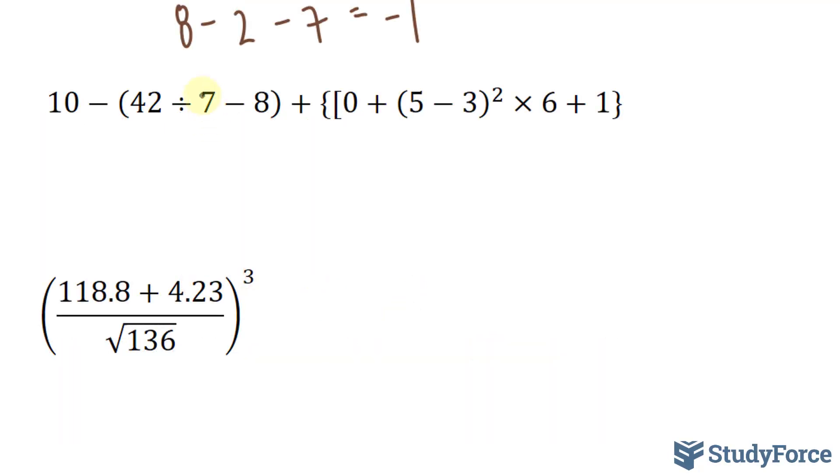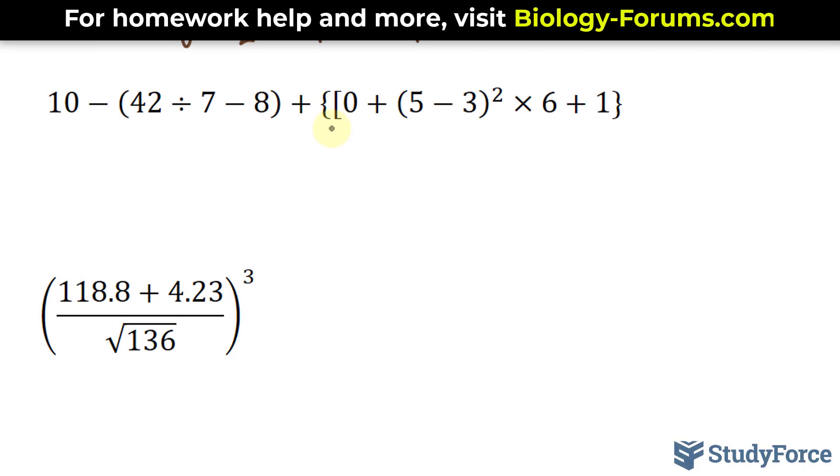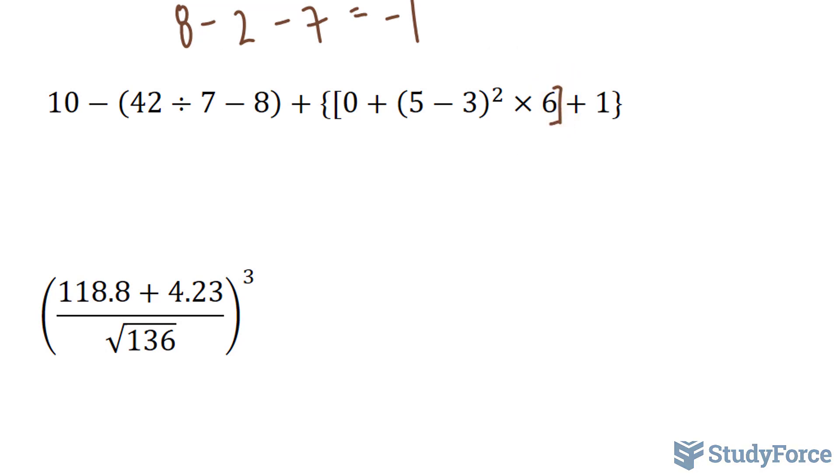In our next example, we have 10 minus this expression that's in brackets, plus these braces, and then we have this square bracket. We can focus on this part and this part at the same time, because neither takes priority. Let's start by finding out what 42 divided by 7 minus 8 is. 7 is divisible into 42 perfectly, it's 6. 6 minus 8 is -2. So we have 10 minus -2. And now we have (5-3)², that's equal to 2, raised to the power of 2 is 4, times 6 is 24, plus 1. 10 minus -2 is 8, plus 25, the answer is 33.